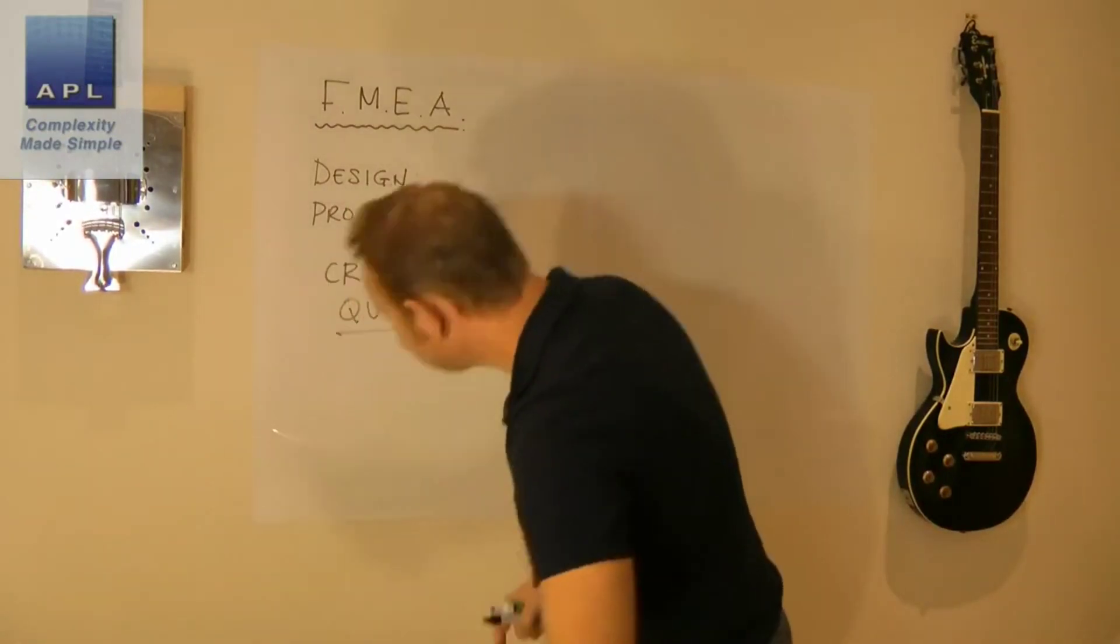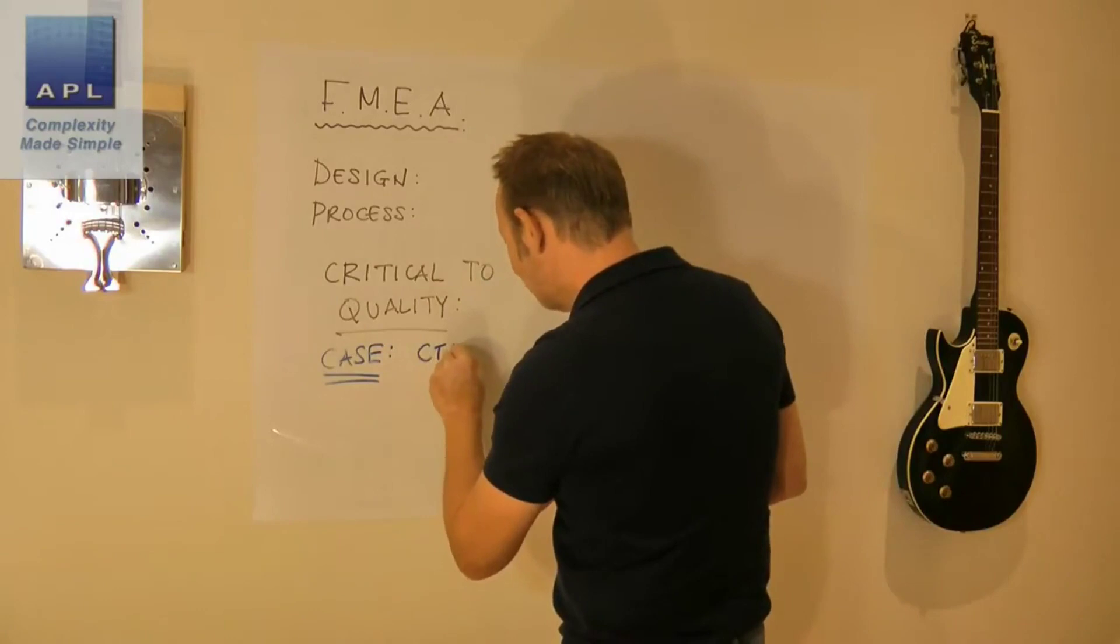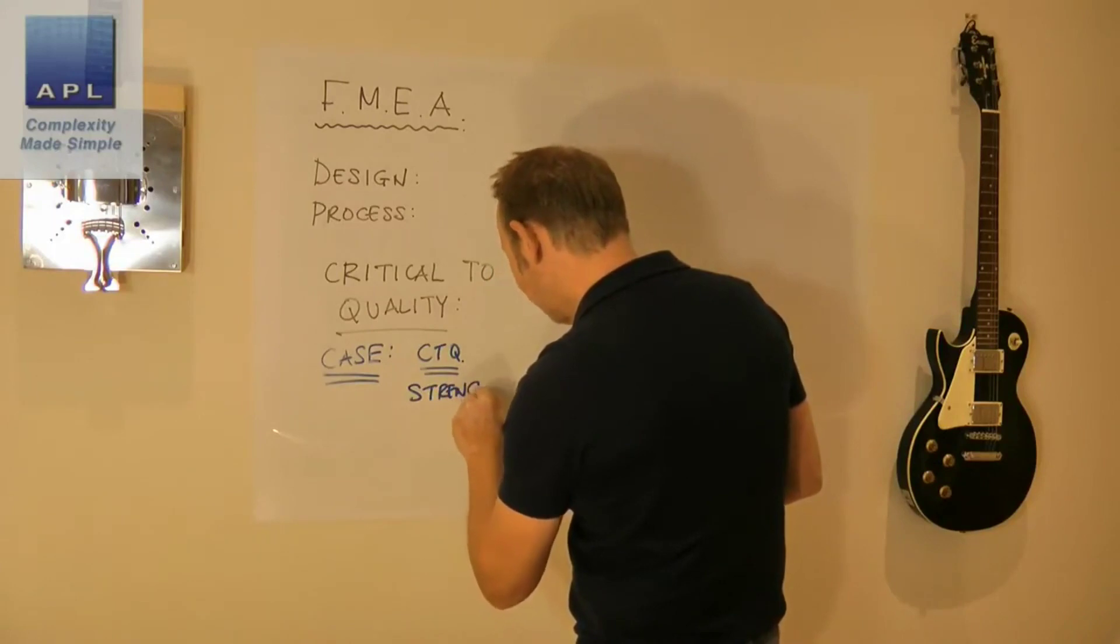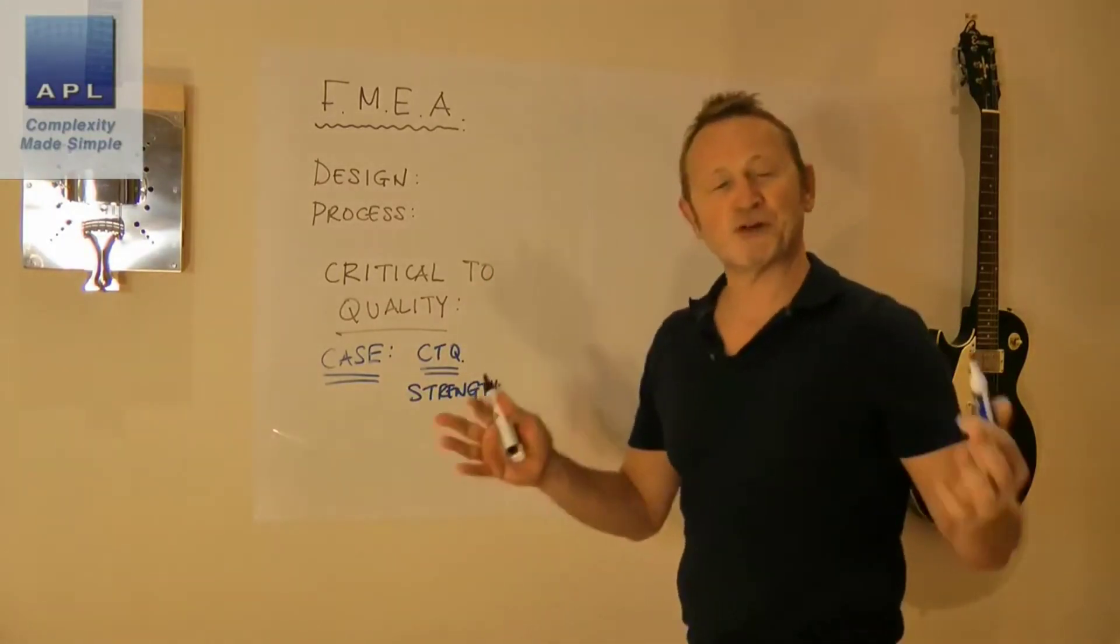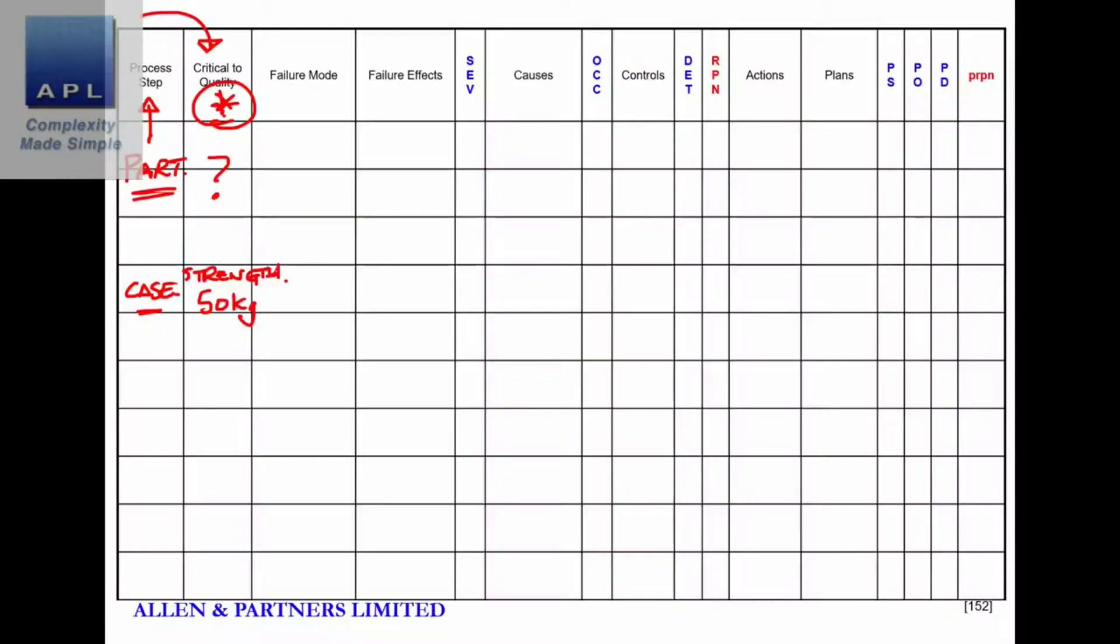What's critical to quality about the plastic case? It's the plastic case. What's critical to quality about that case? Strength. And of course we could put a value to this. Let's say we wanted to resist 50 kilograms—probably not enough for a big fat guy, but 50 kilos maybe. So that's the strength that we want. Now as you work across the FMEA, of course you're going to decide what risk this is and how much money you want to spend on this. Is it really important that we do this?